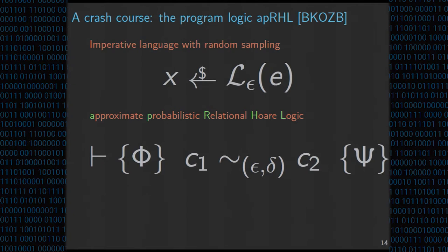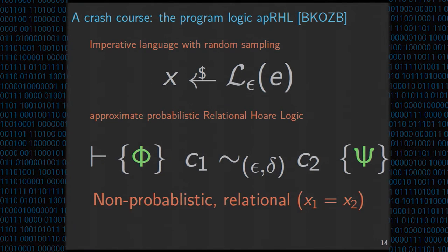APRHL stands for Approximate Probabilistic Relational Hoare Logic — this is an existing logic we do not propose. The judgments in this logic look like this: phi and psi represent a precondition and postcondition, but it's relational, so it talks about two runs. We have two programs c1 and c2, and we want to make statements about how these two programs are related. The assertions phi and psi are non-probabilistic relational assertions — for instance, x1 equals x2 — meaning the value of x on the first run equals the value of x on the second run. There are also two numeric indices, epsilon and delta.